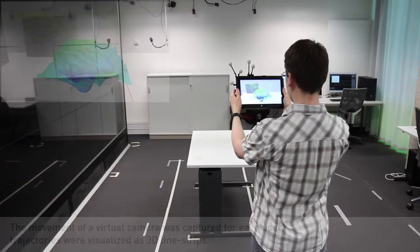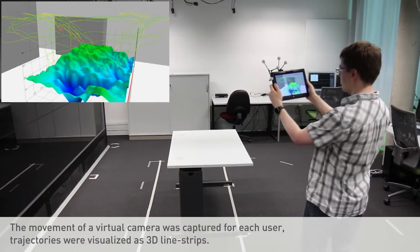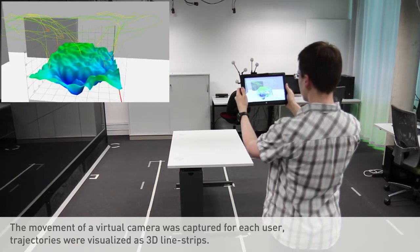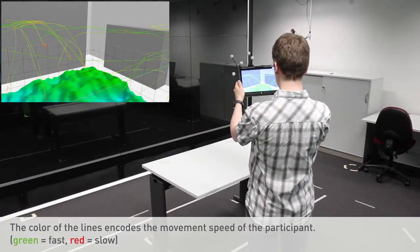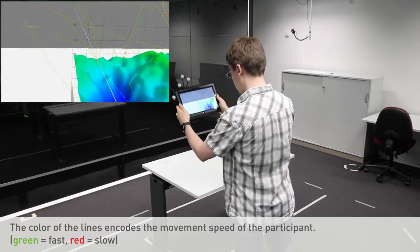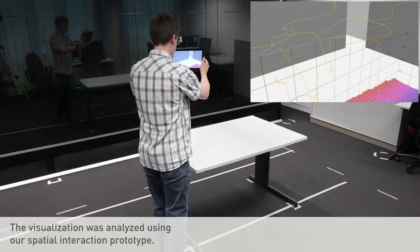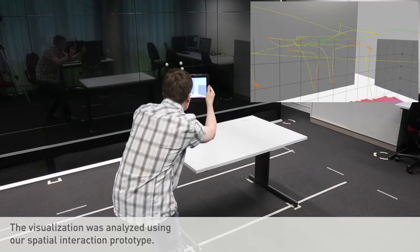We recorded the virtual camera movements during the study and visualized this trajectory data as 3D line strips. The color of the lines encodes the movement speed. We analyzed the data with our spatial interaction prototype and identified several interesting patterns.